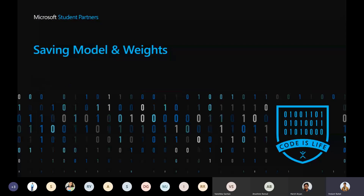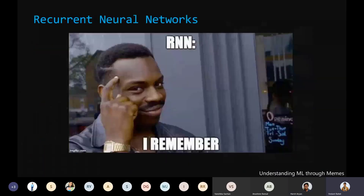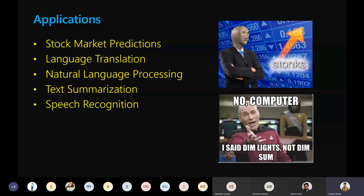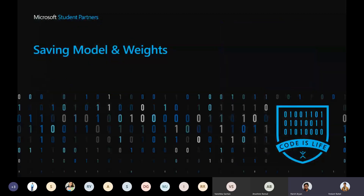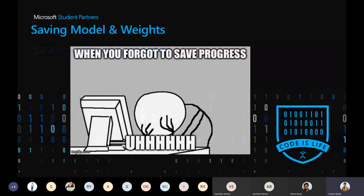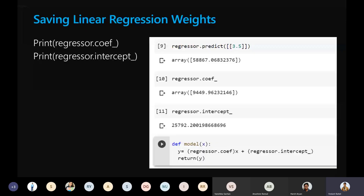The coding of RNN is not covered in this course; however, links to blogs about LSTM will be shared. Moving on to saving models and weights: in earlier lectures we created linear regression and classification models but forgot to save the weights. For a linear regression model, once you have regressor.fit(x, y), you can extract the coefficients with regressor.coef_ and the intercept with regressor.intercept_.